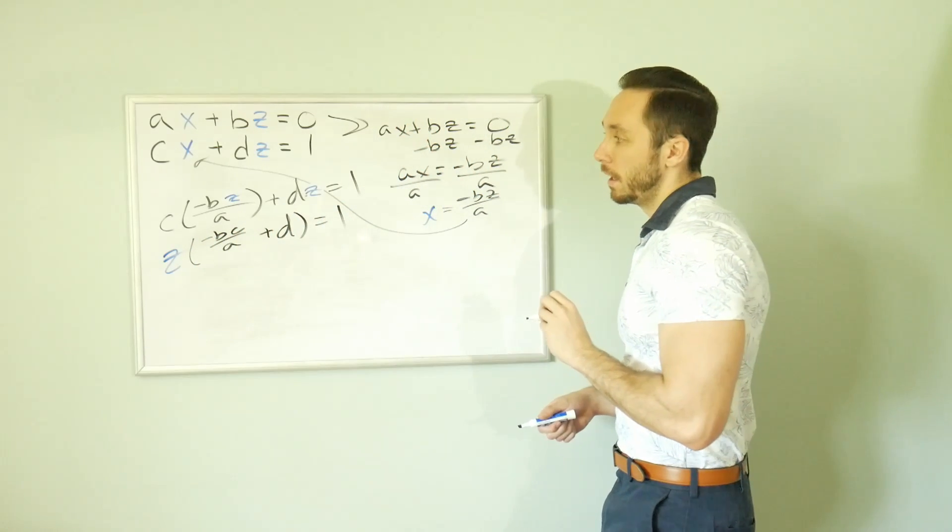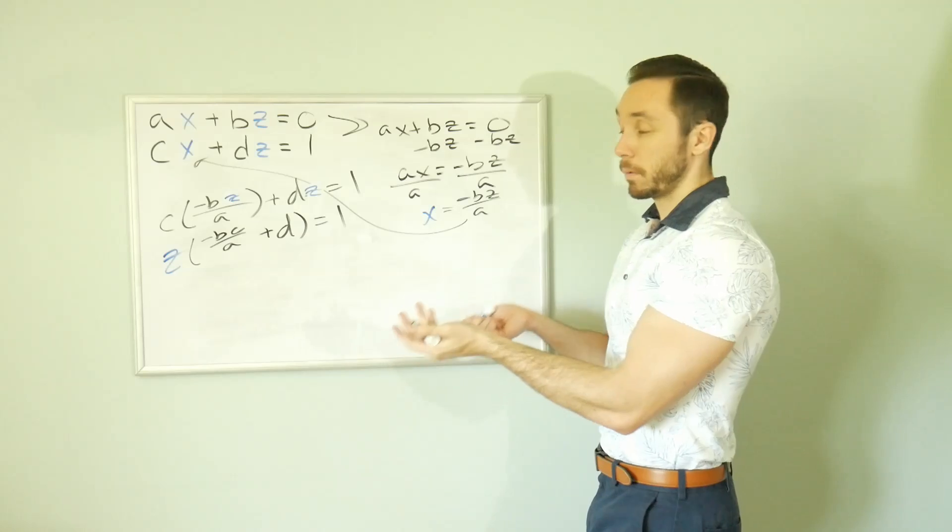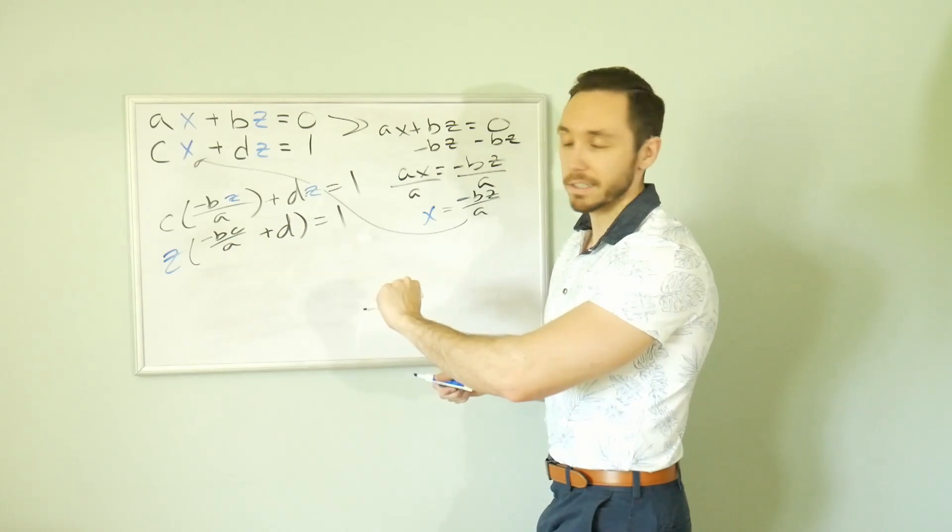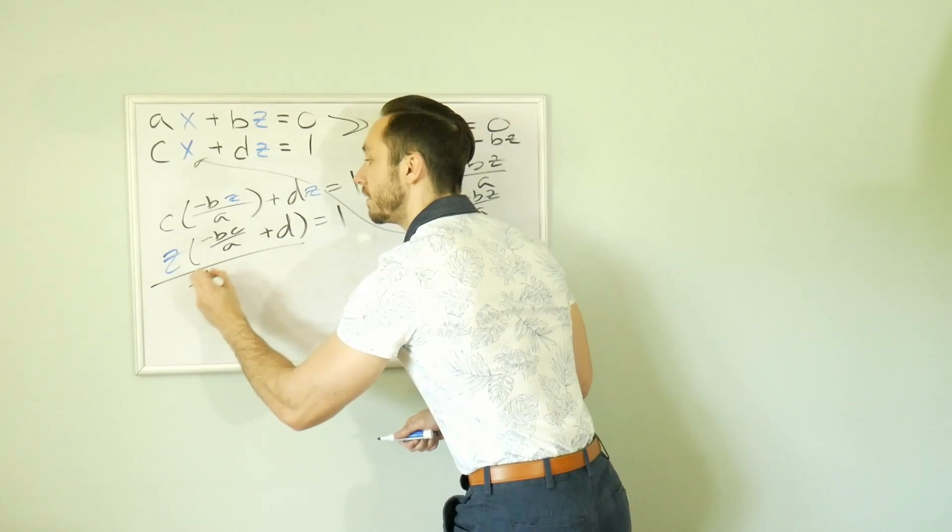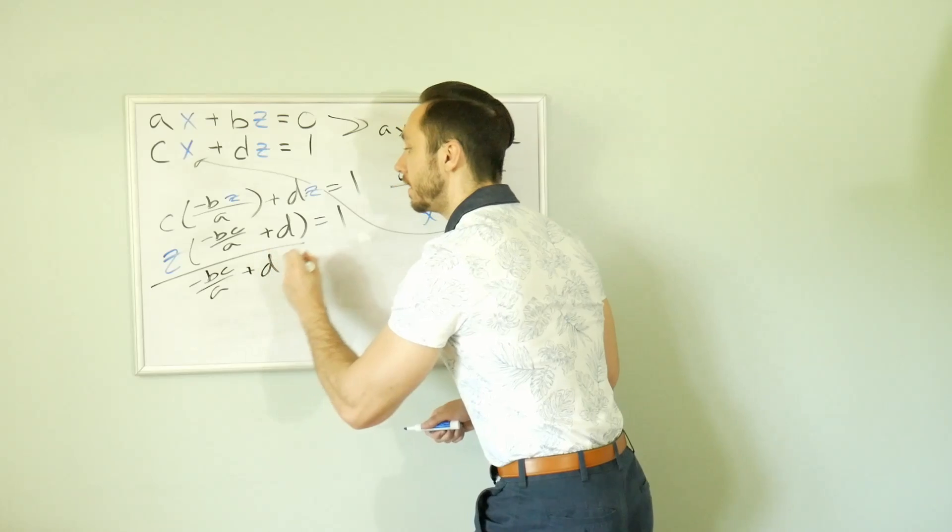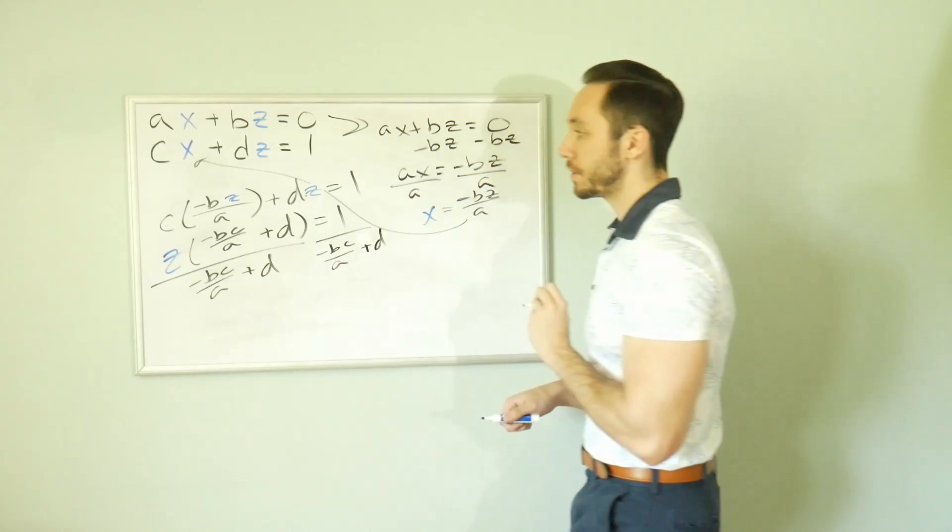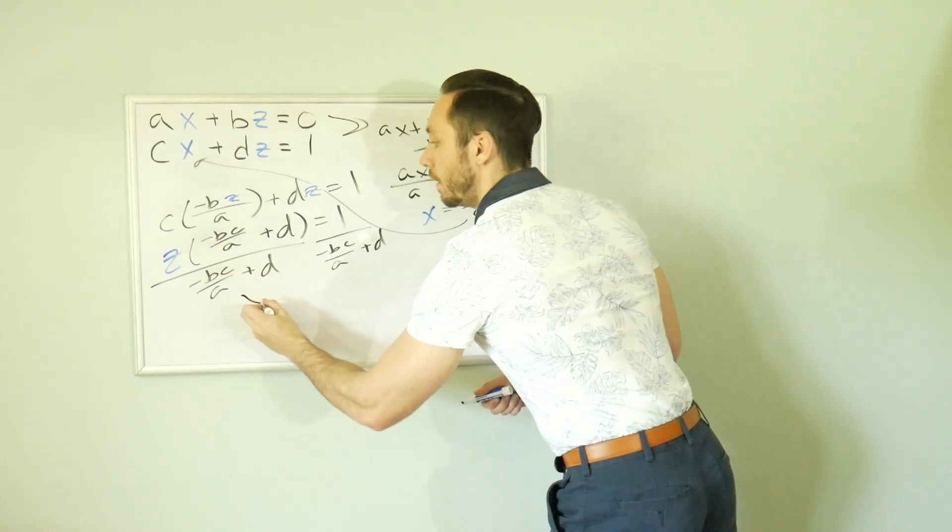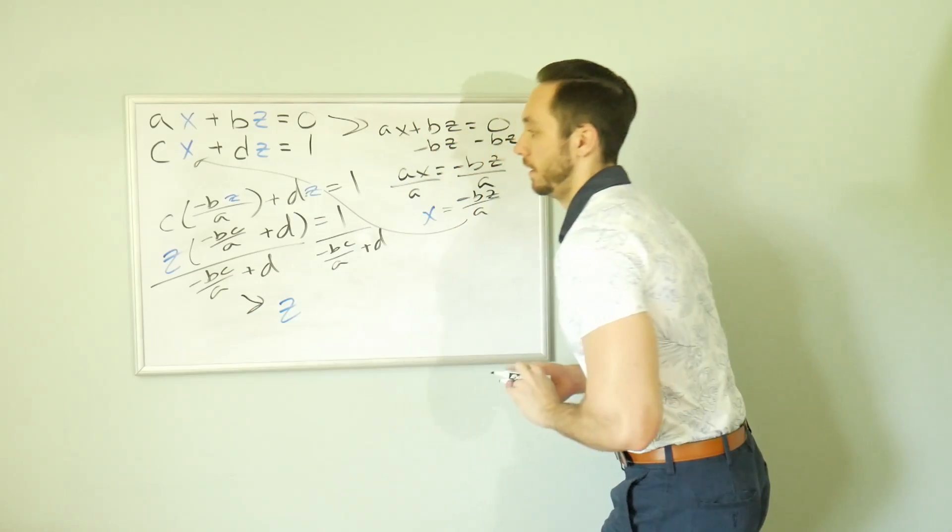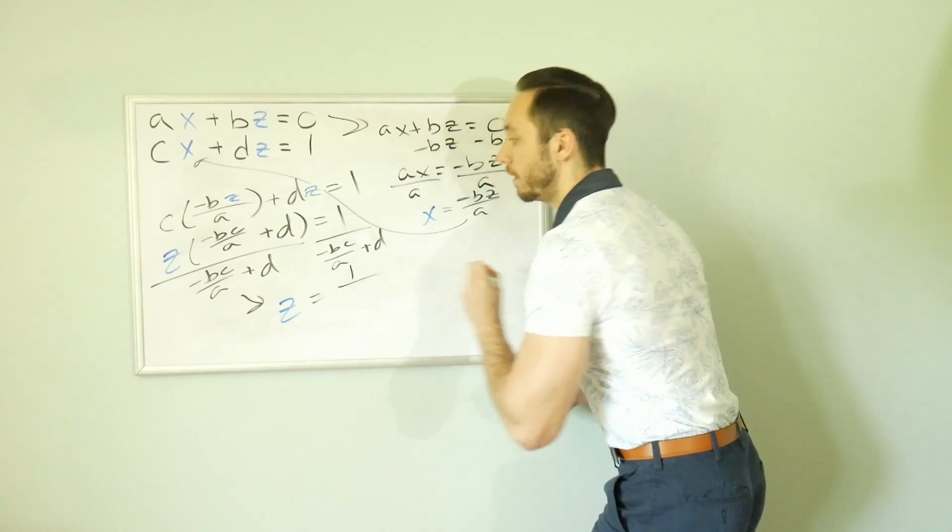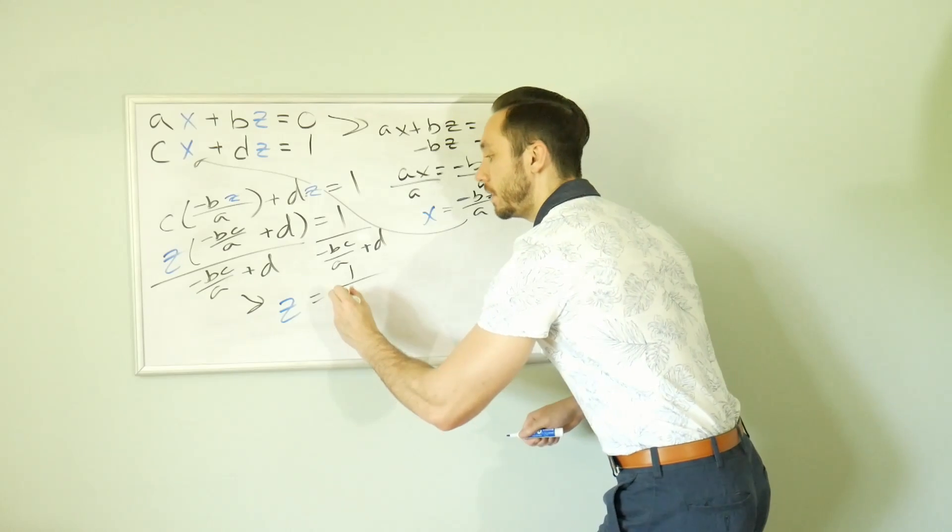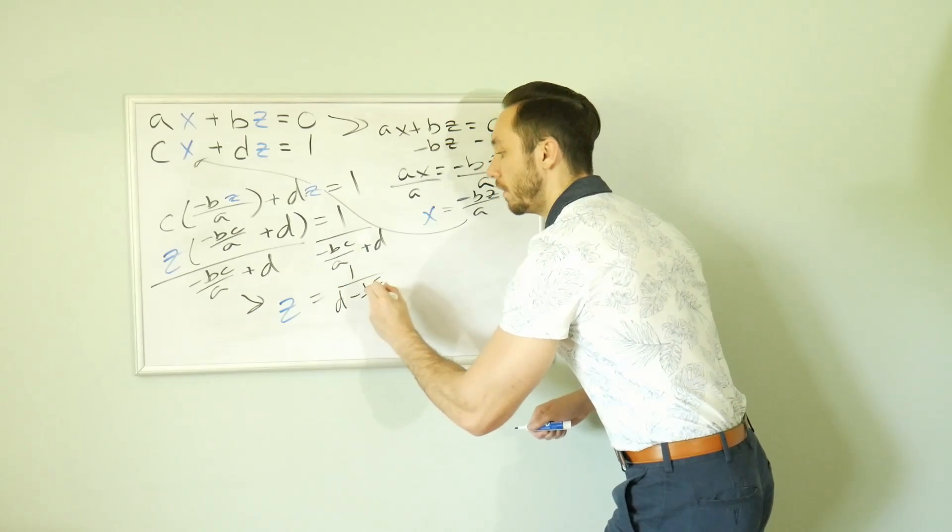Next, we're actually pretty much done. We're one step away. We just have to divide out that nasty expression. So divide negative BC over A plus D from both sides of our equation. We end up getting Z is equal to 1 over D minus BC over A.